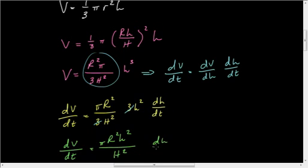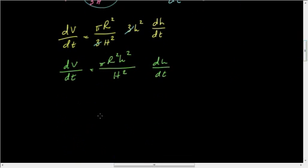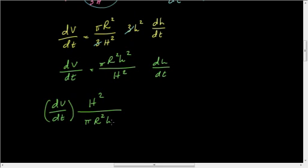Now solving for dh/dt, I'm simply going to move this stuff over to the other side by flipping it. So I'm going to take the rate at which I'm filling this conical tub, and it's going to be capital H² all over π capital R² little h² is equal to dh/dt.